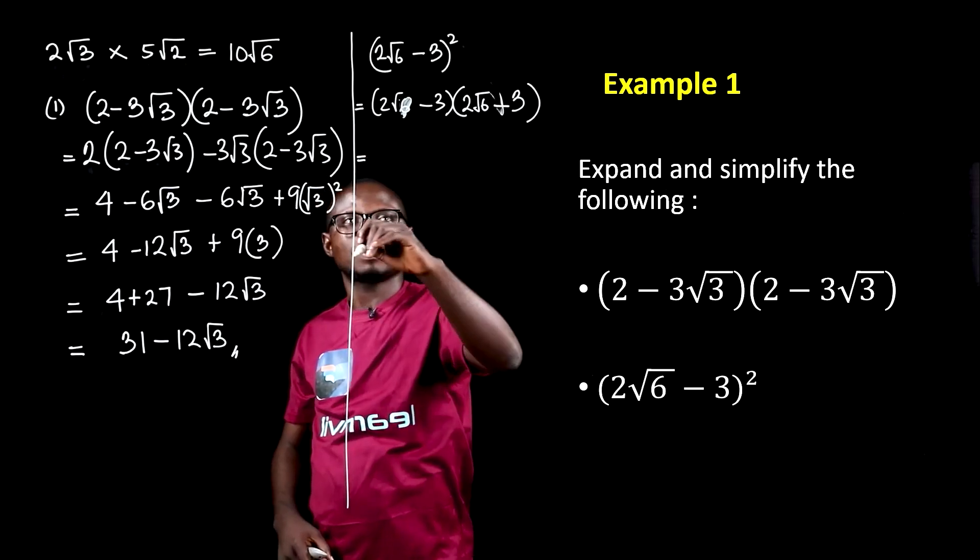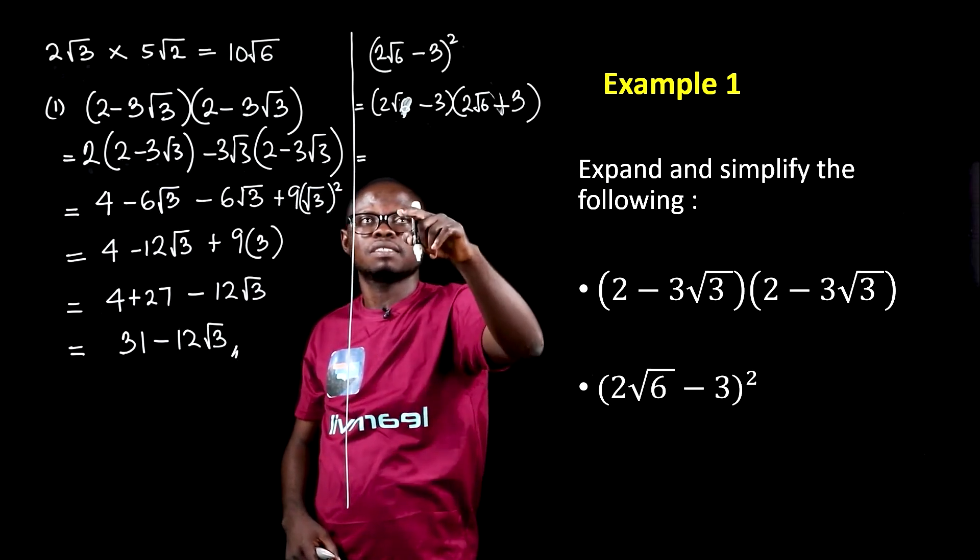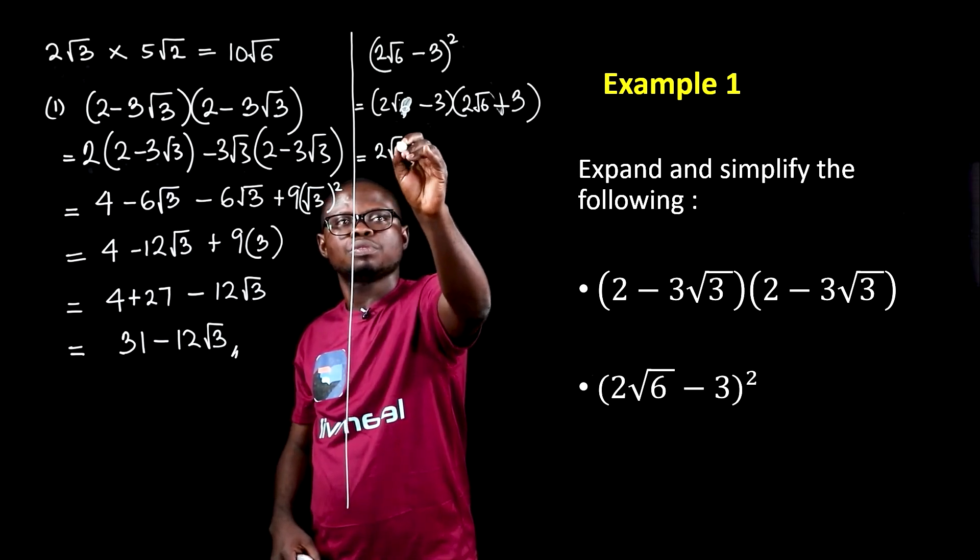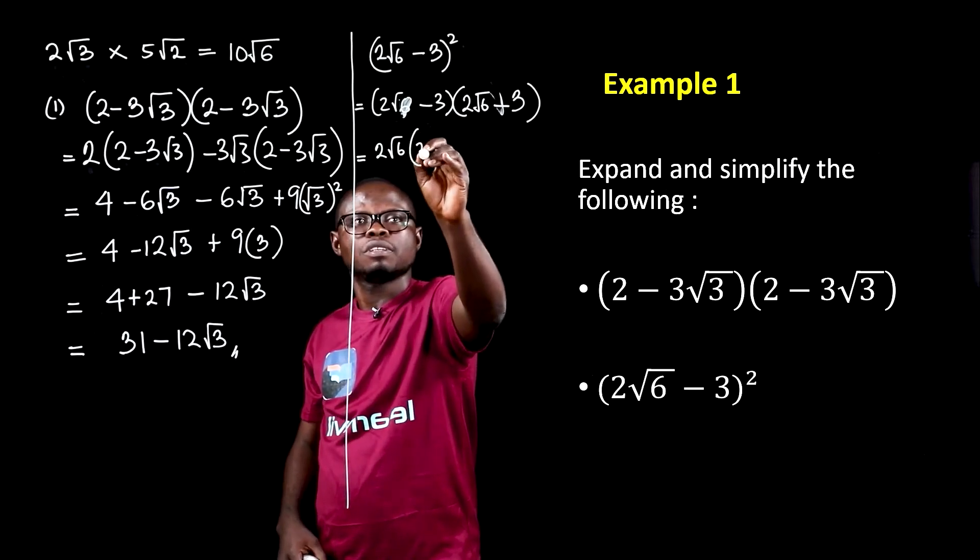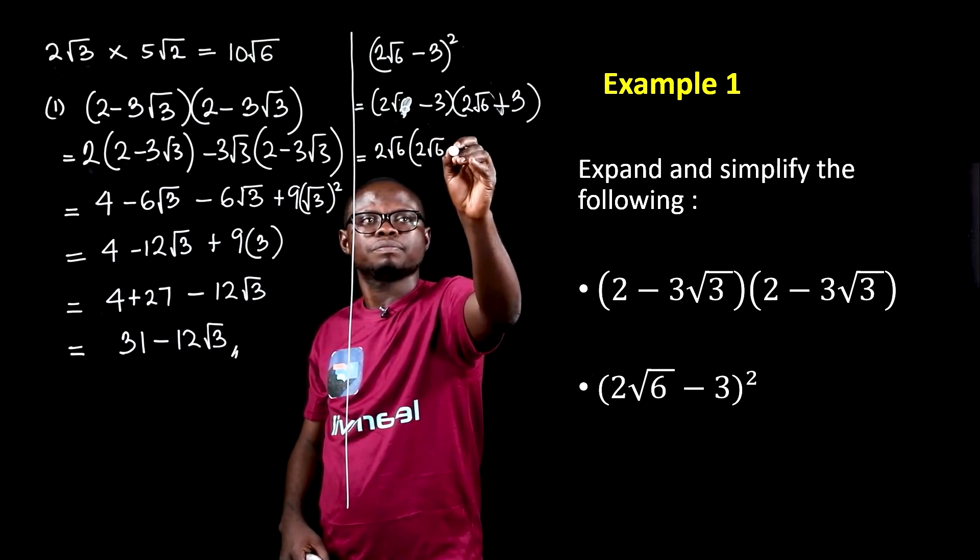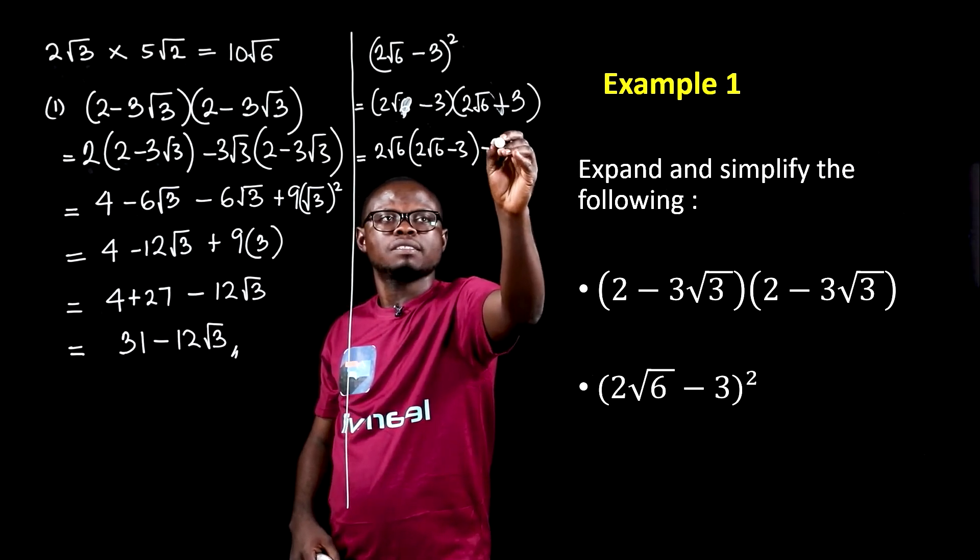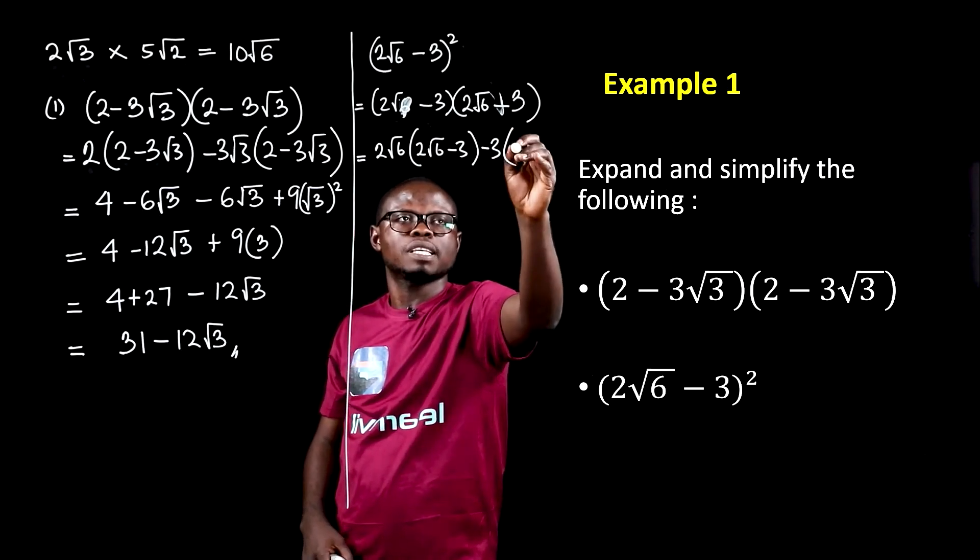We expand this one by distributing this over this. We have 2 root 6 times the second bracket, then minus 3 multiplies the whole of the second bracket.